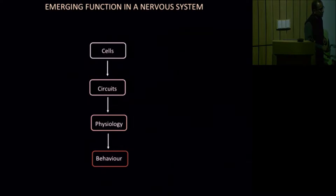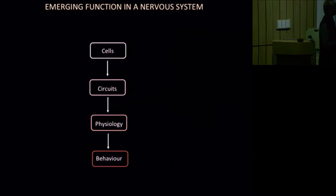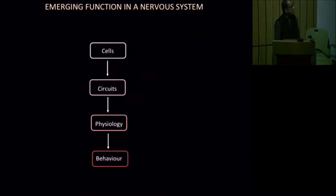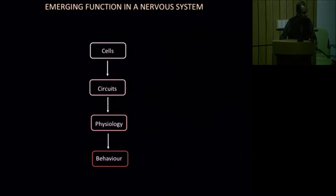These circuits in turn are composed of individual cells with their own molecular physiology and function. So if you want to understand mental illness, one would need to break down the problem of brain function into these different levels.